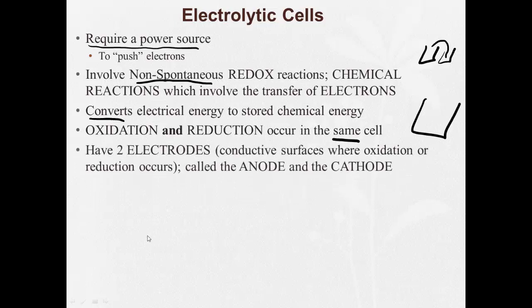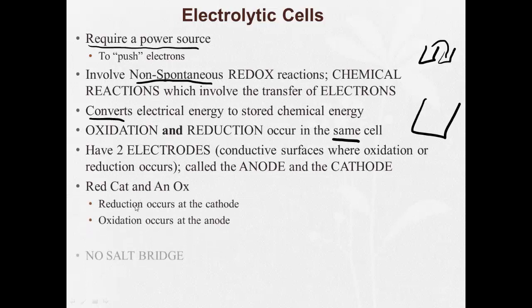They're similar in that there's two electrodes, an anode and a cathode. Red cat and an ox still apply - reduction still occurs at the cathode, oxidation still occurs at the anode. And like I said earlier, there's no salt bridge.